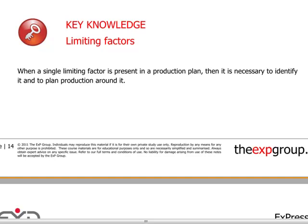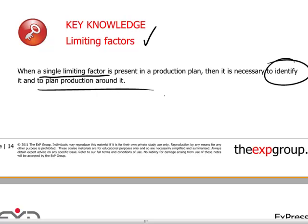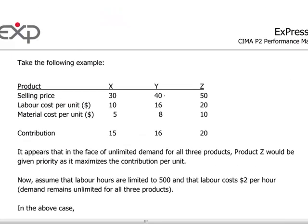Welcome to the EXP Group's discussion of CIMA paper P2. Today we're going to talk about limiting factors. The context is: if we have a single limiting factor which is identified, which somehow imposes a bottleneck in a production process, then it's necessary not only to identify it, but to quantify the implications and to plan our production around that bottleneck.